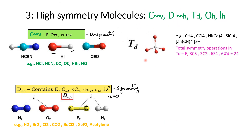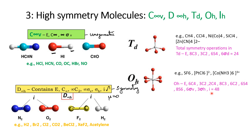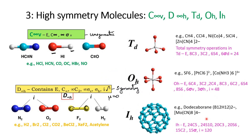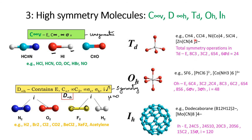Tetrahedral compounds belong to the Td point group. The number of symmetry operations: tetrahedral has 24 operations, octahedral has 48 operations, and icosahedral has 120 operations. Examples are included for each. If you already have some idea, it will be easy; otherwise, watch part 2 for basics and tricks to solve point groups within a few seconds.